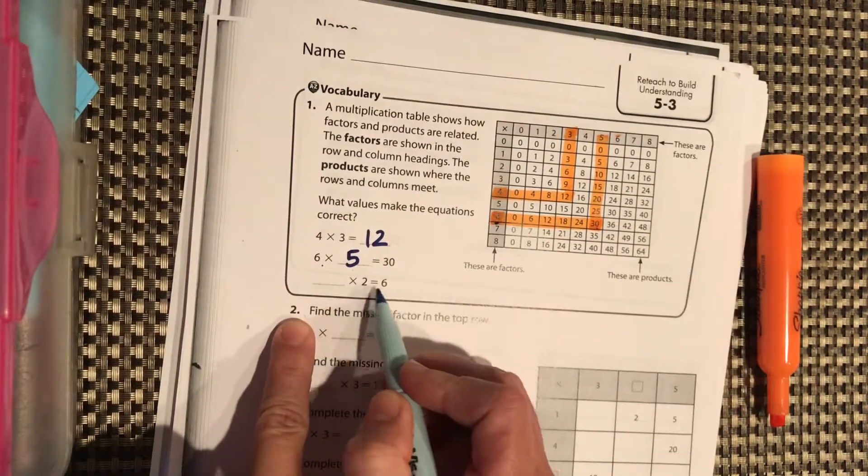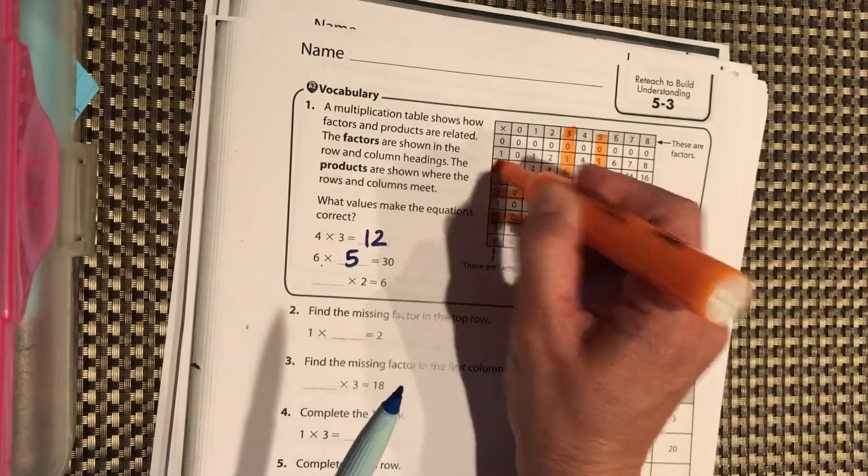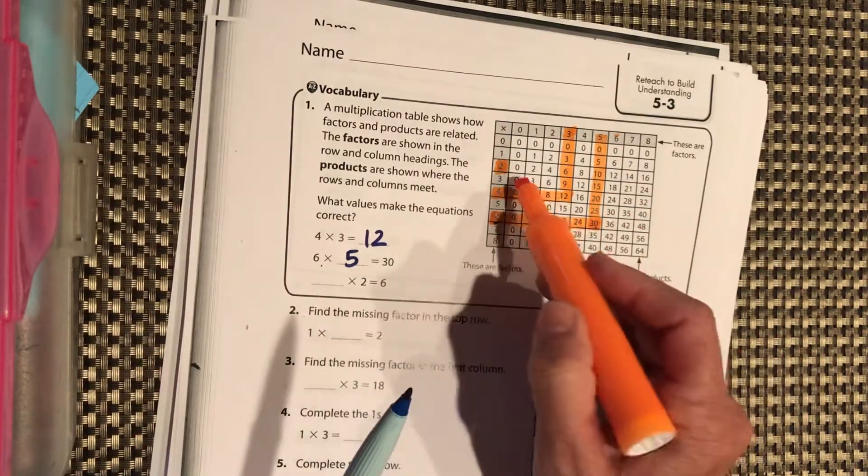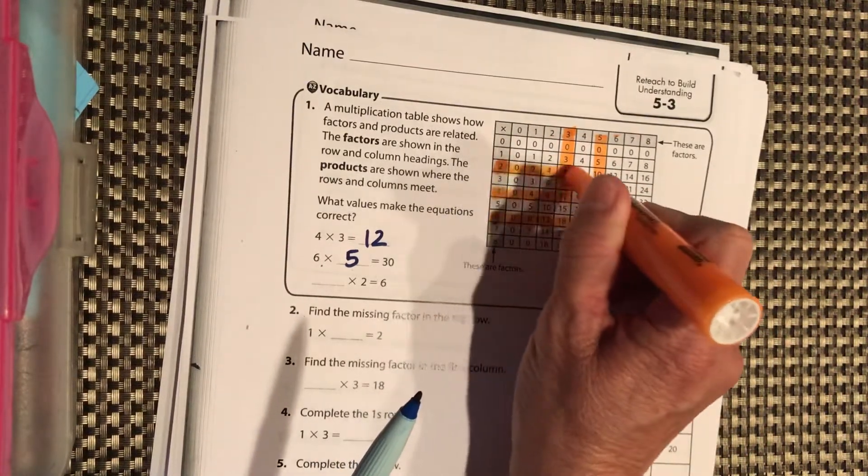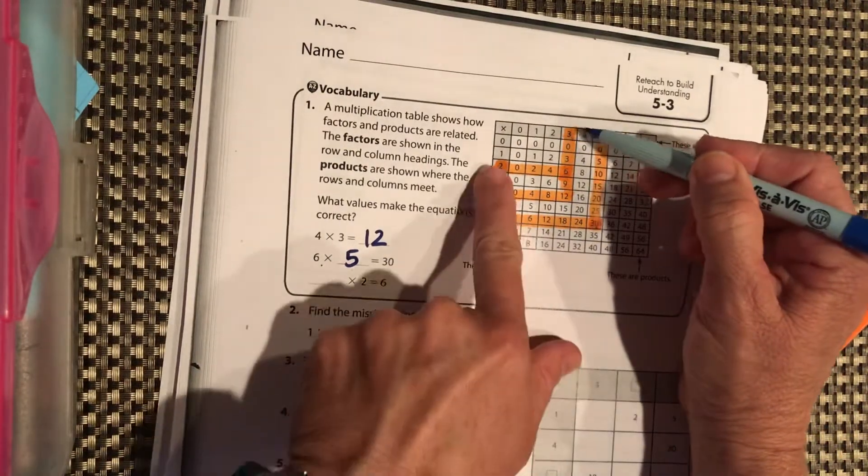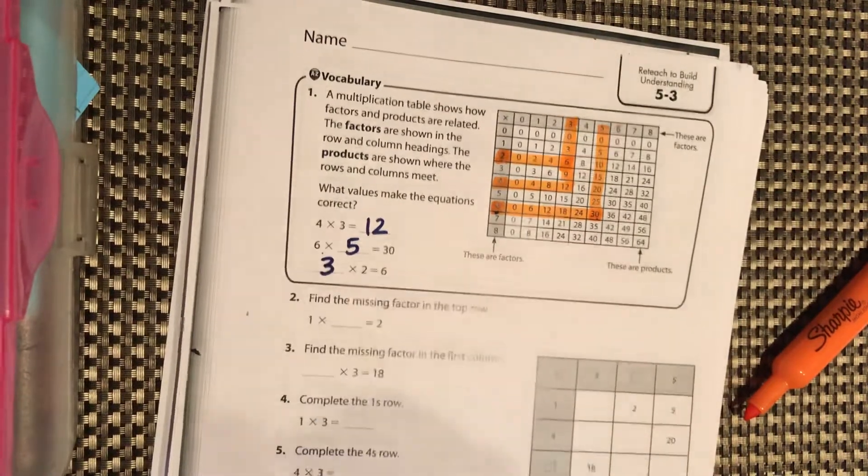What factor times 2 equals 6? Here's one of our factors, 2. We want to find what number on the top do we multiply by to get to 6. Well, here's 6 right here, and if we go straight up, that's 3. So 2 and 3, they meet at 6. So 3 times 2 equals 6.